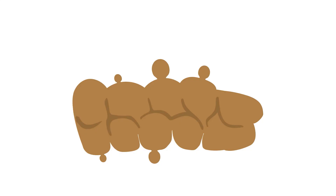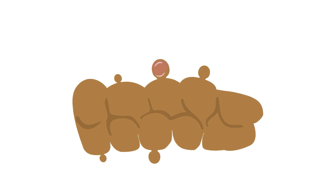As we age, it is common for the large intestine to form little round outpouchings in the wall called diverticula. These usually do not cause much trouble, but sometimes they can become obstructed, resulting in inflammation and infection known as diverticulitis, and can even rupture if untreated.